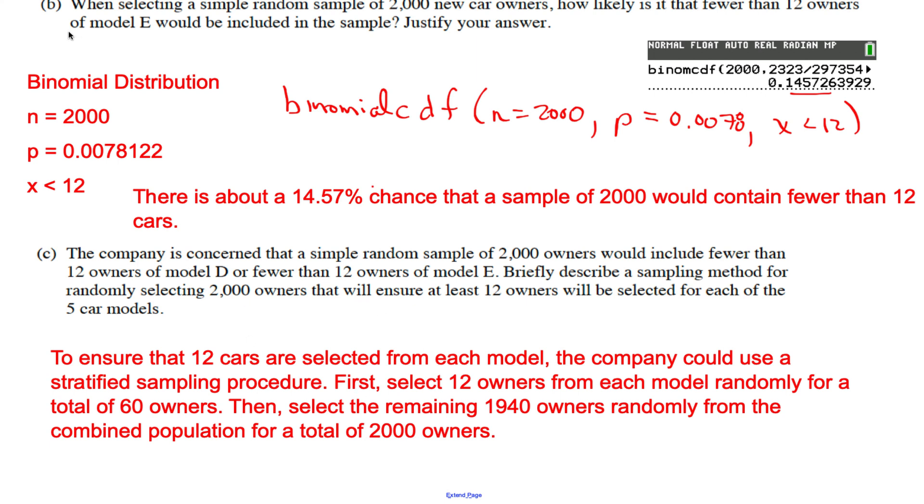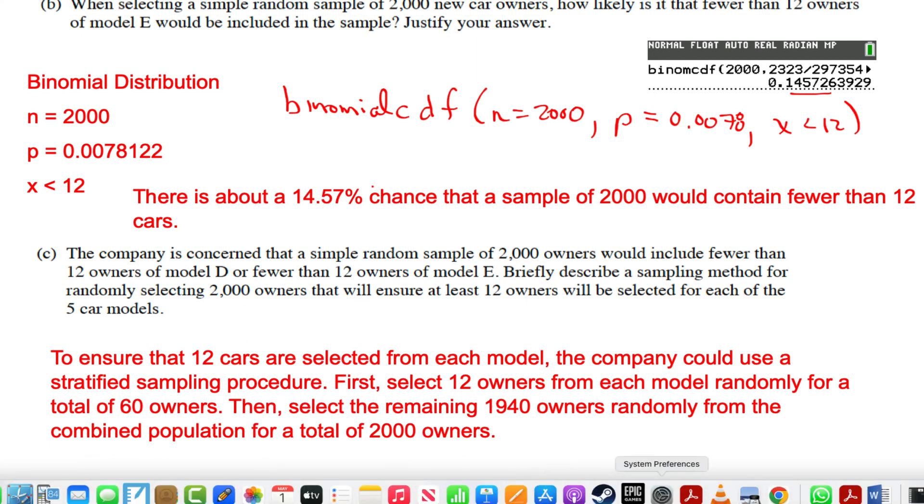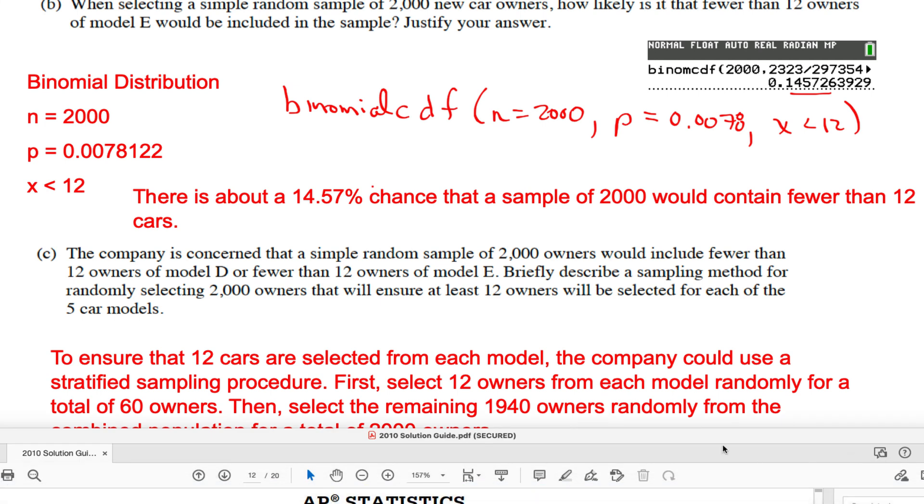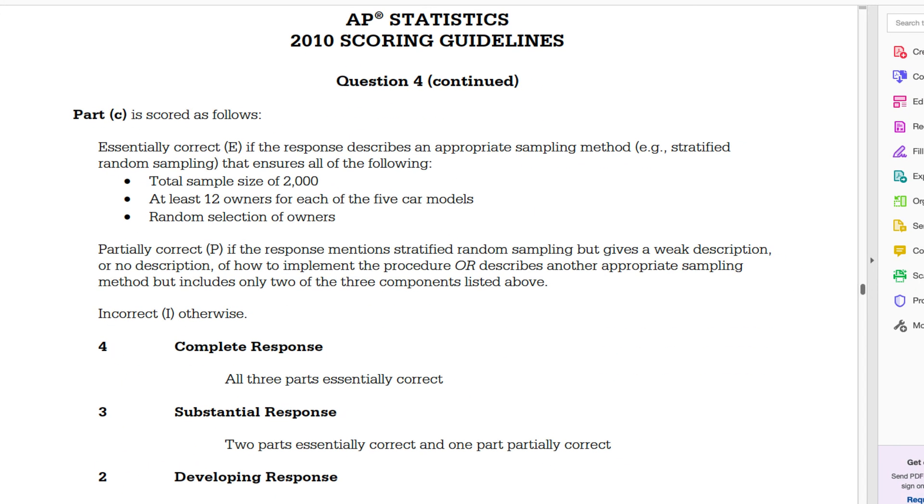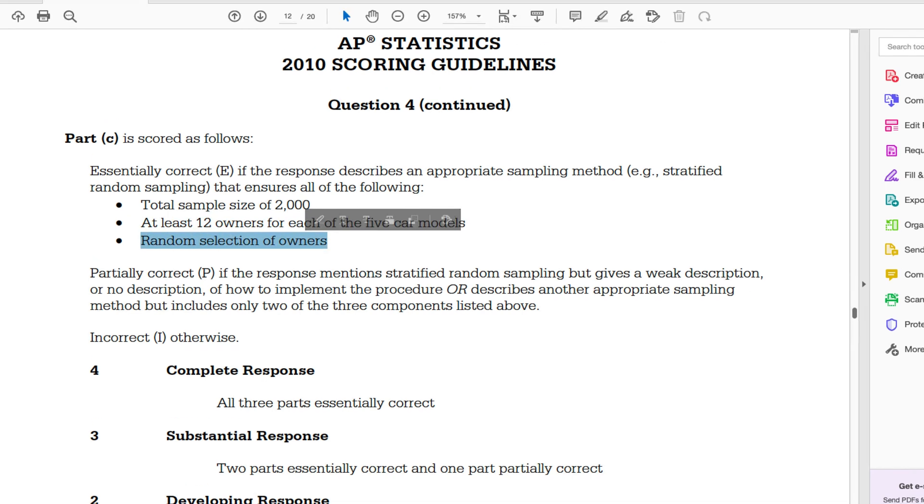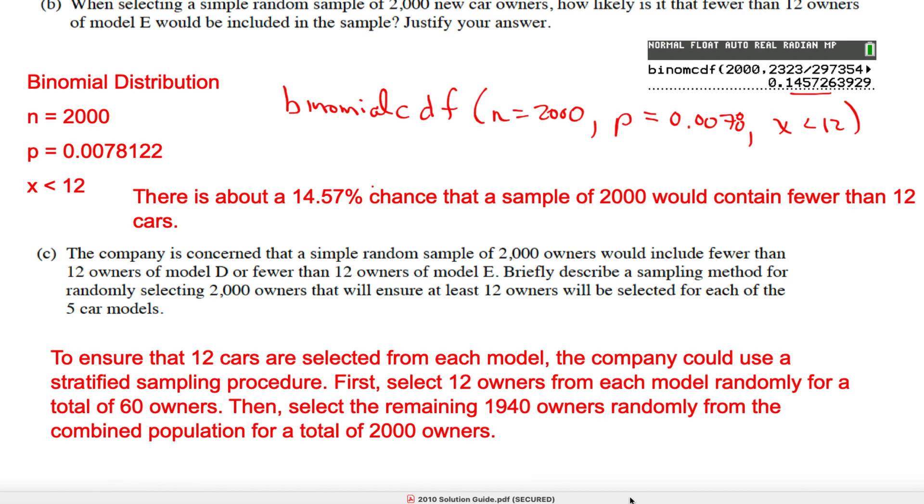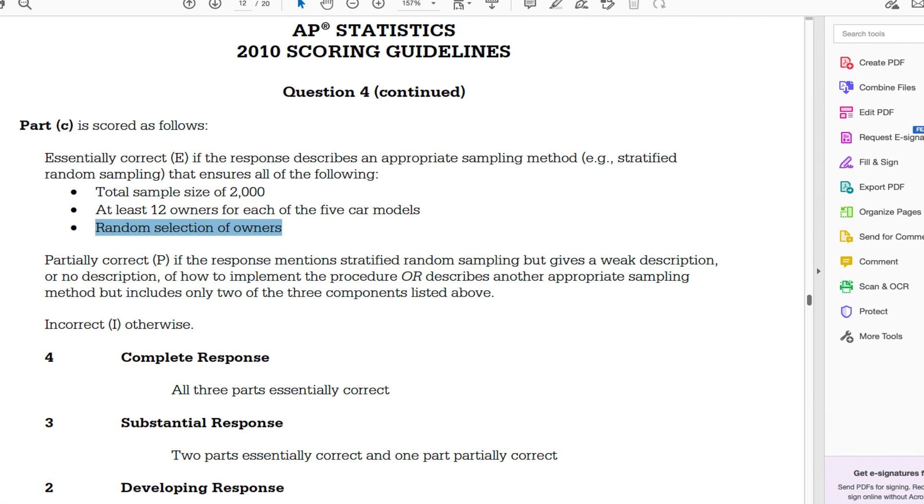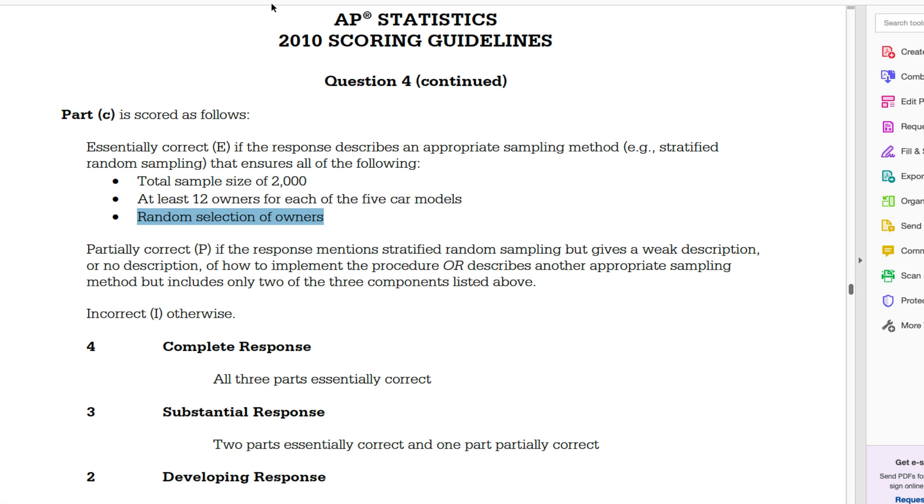Now the answer key, I think they're a little bit more sophisticated than me. It's hard to believe, it's shocking I know. But here's how they score it: it's essentially correct if your total sample size is 2,000 and you have at least 12 owners for each of the five car models and you use a random selection. Did I say randomly select? Oh yeah, I did, randomly right there, good.